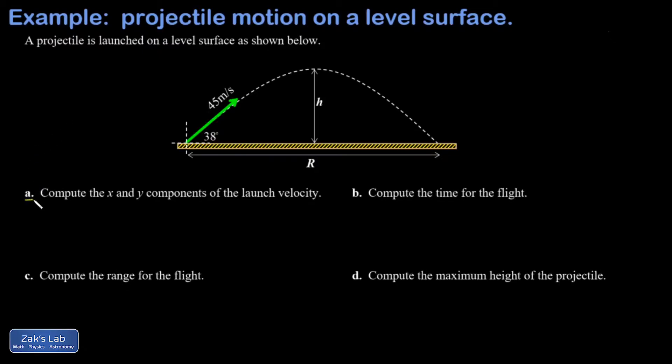The way we start things out is by breaking that initial velocity into components, which is actually part a of the question. I normally do as much as I can up here in the diagram, and I'm going to break that velocity vector into a horizontal piece that I can call Vx.